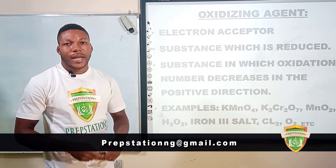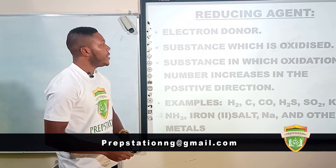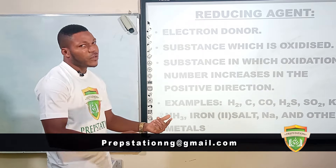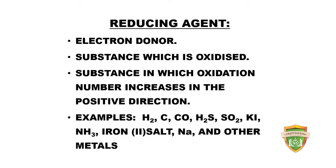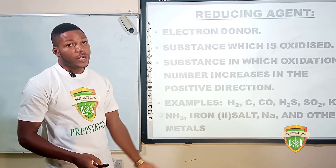All non-metals are described as oxidizing agents, majorly the group seven elements — the halogens. Reducing agents are the opposite of oxidizing agents. They are electron donors, substances which are oxidized, and substances in which oxidation number increases in the positive direction. Examples include hydrogen gas, carbon, carbon(II) oxide, hydrogen sulfide, sulfur(IV) oxide, potassium iodide, ammonia, iron(II) salts, sodium, and other metals. Majorly, all metals are known as reducing agents.